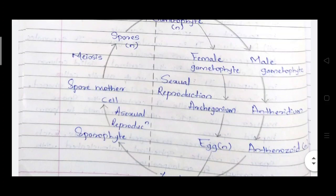The zygote grows as a sporophyte. The sporophytic body contains the foot and the capsule; the seta is absent. The sporophyte capsule contains spore mother cells. When these spore mother cells undergo meiosis, they form spores which are again in the haploid state, while the sporophyte is in the diploid stage.